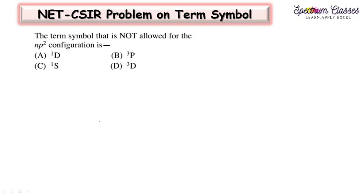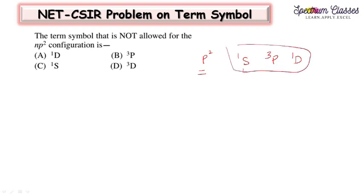The next question is: which term symbol is not allowed for the NP2 configuration? For P2 configuration, the allowed terms are 1S, 3P, and 1D — that is, multiplicities 1, 3, and 1. So 3P is there, 1D is there, 1S is there. The term that is not allowed for this configuration is identified from this set.